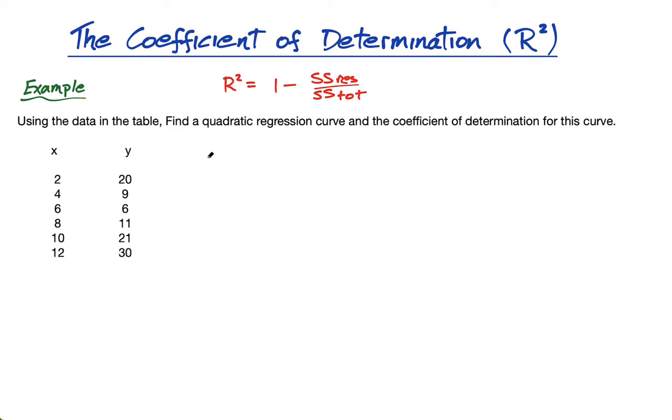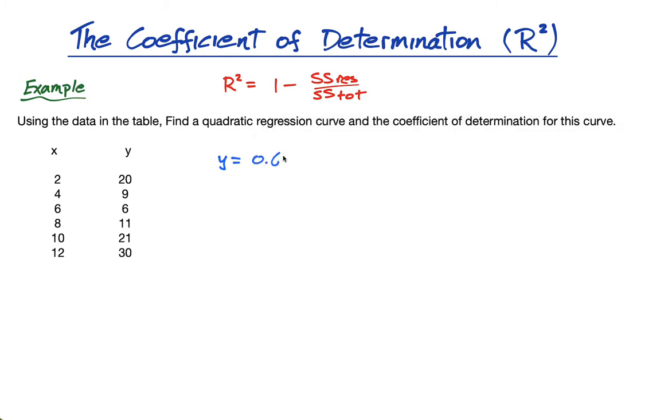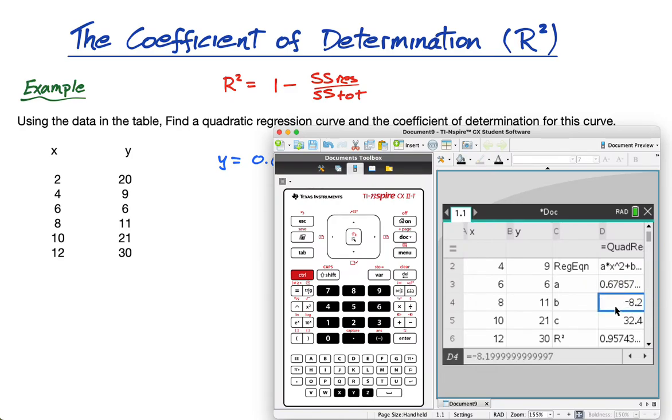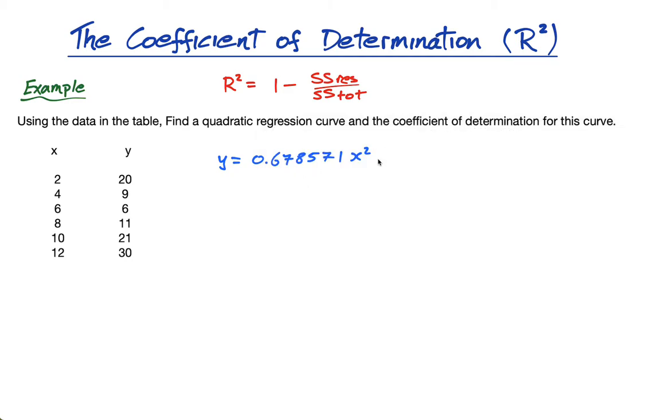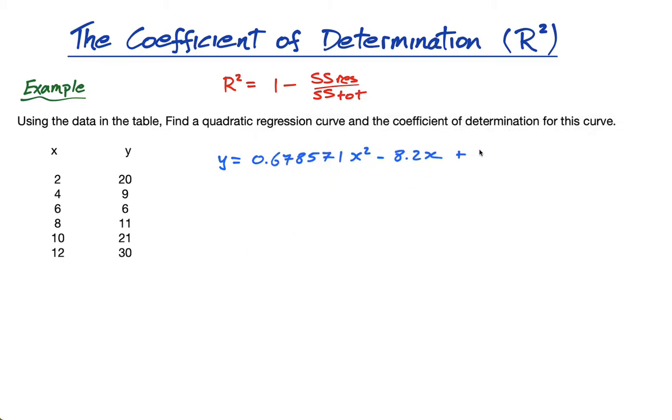So, okay, so the quadratic regression curve is y equals, and we're just going to put in a, so 0.678571 x squared, plus, although I think it's minus, so it's minus 8.2, I can actually just put 8.2 there, because it's minus 8.1999999, so I'll just put minus 8.2x, and then finally plus 32.4. It's probably not exactly 32.4, but it's so close that that's what they've given. So that is my regression curve, my quadratic.